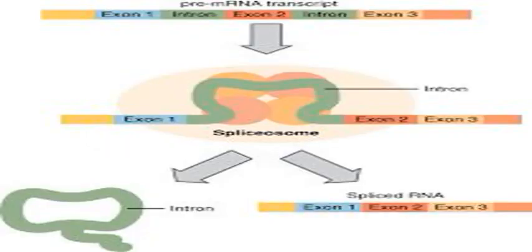Each codon codes for a specific amino acid, except the stop codons, which terminate protein synthesis. The translation of codons into amino acids requires two other types of RNA: transfer RNA, which recognizes the codon and provides the corresponding amino acid, and ribosomal RNA, the central component of the ribosome's protein manufacturing machinery.